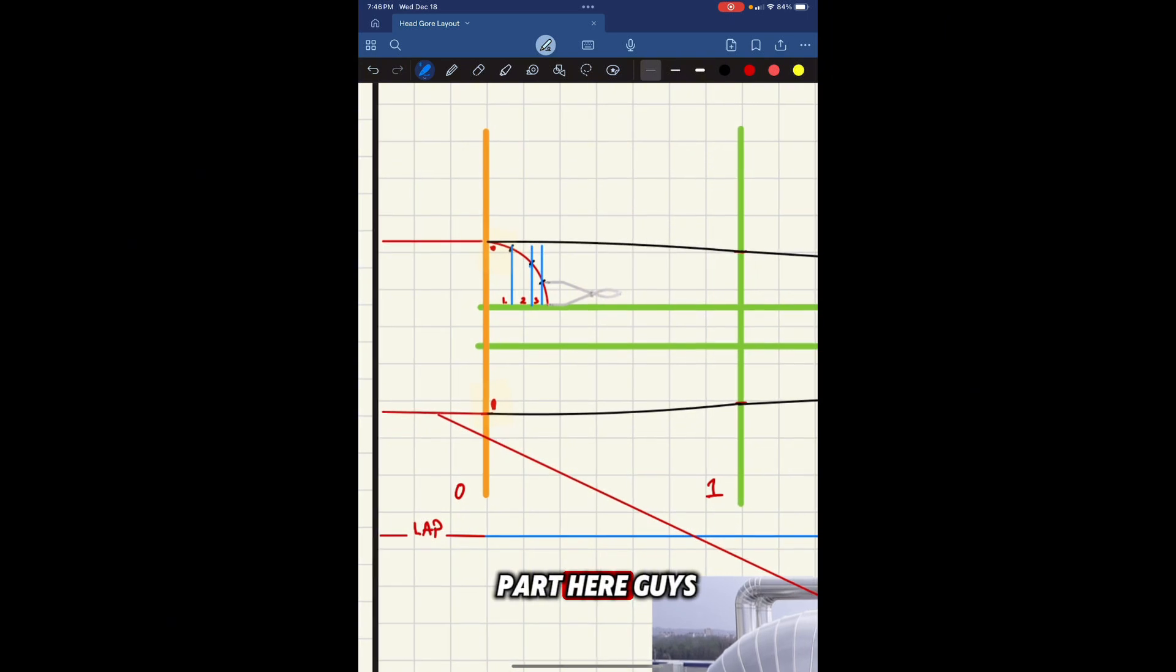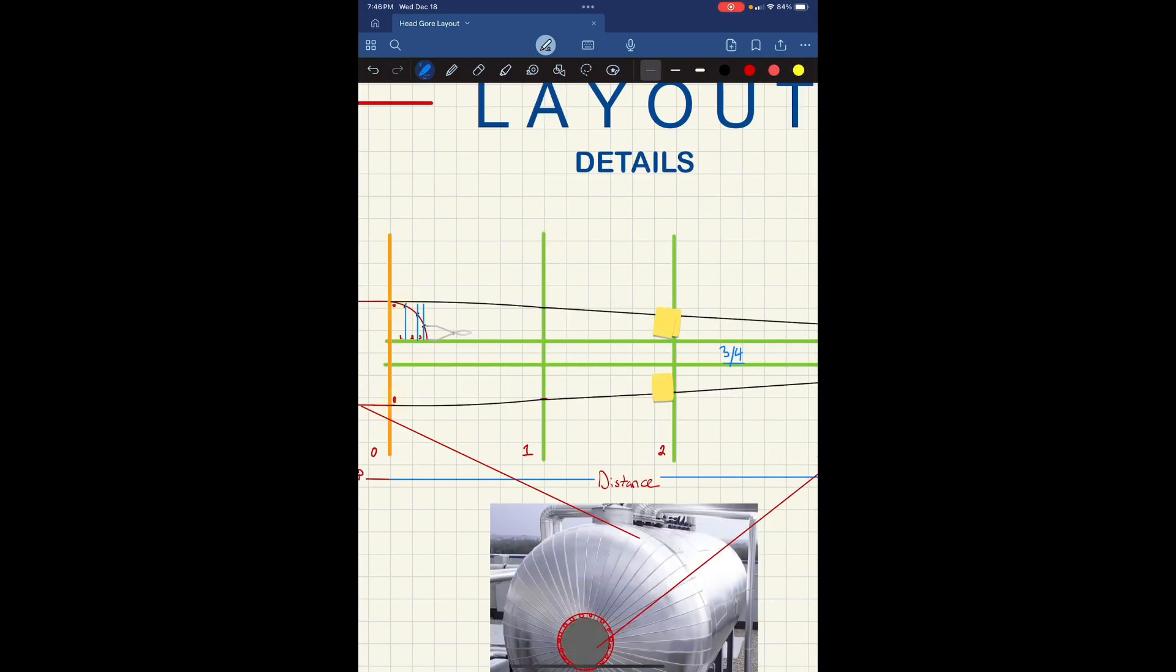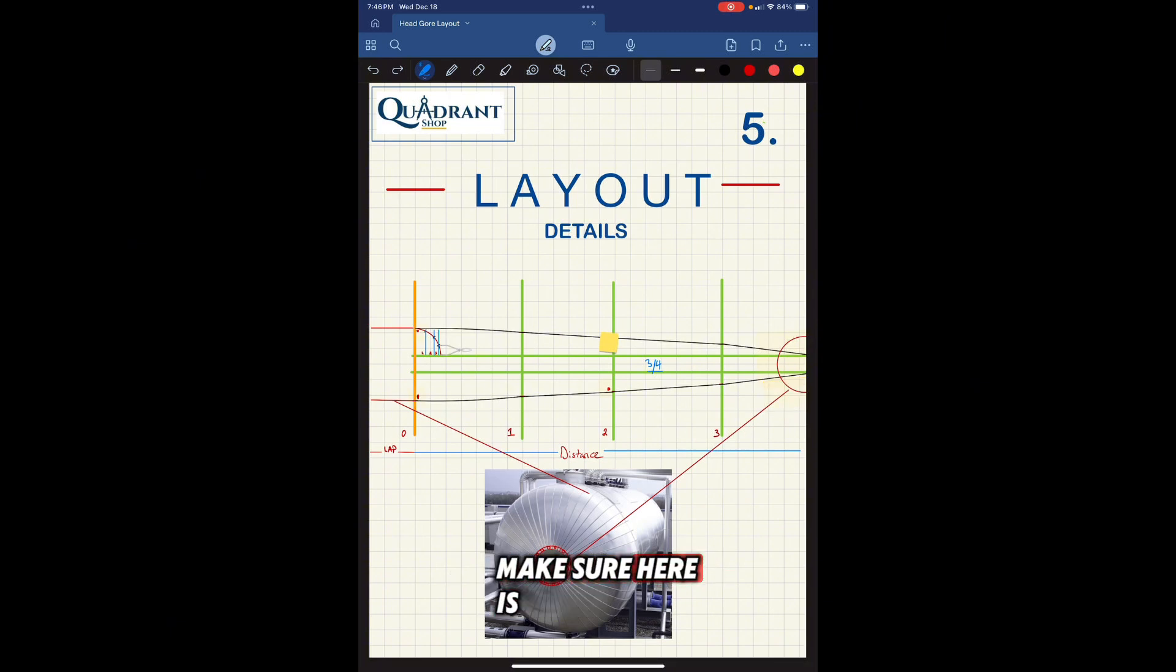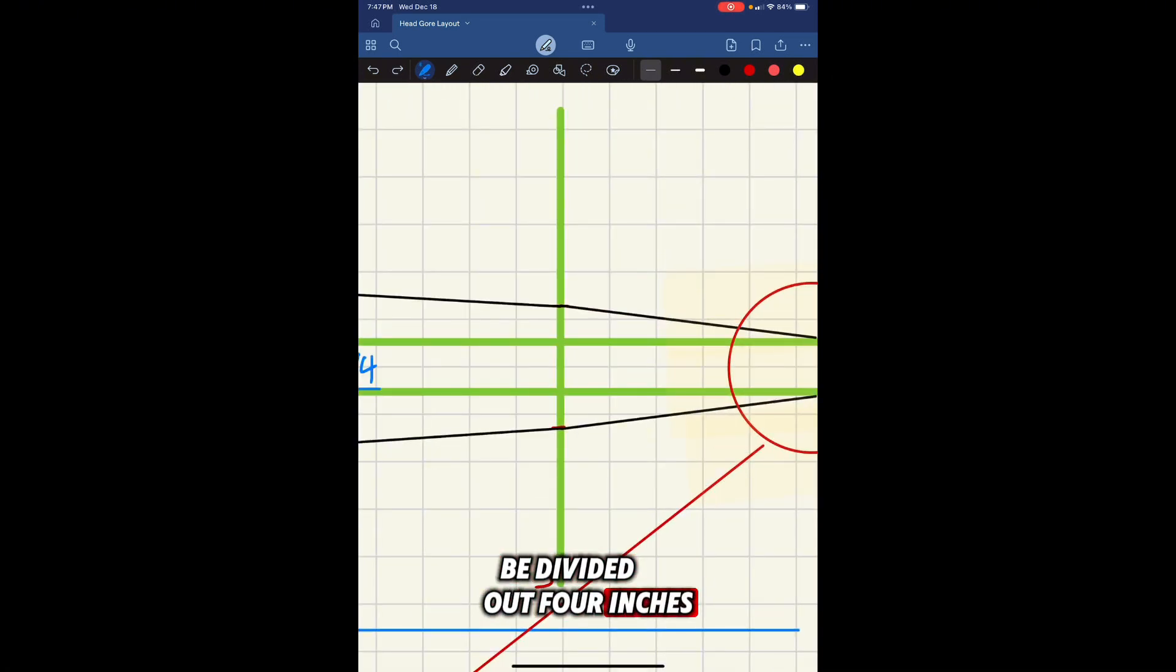This is another important part here, guys. It's very important. We got the lap, it's nice and straight. We got our center lines on line zero and two. Another thing that we got to make sure here is when we are working with a pipe in the center of the vessel, we got to make sure that we make that pipe center on a gore too, just like here in the picture. Say this is an inch pipe. You open your divider at four inches and you make that cutout so you don't get confused when you're laying out the gore.